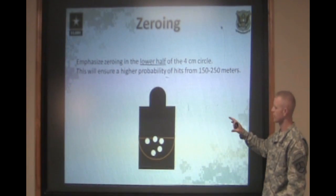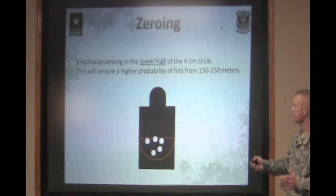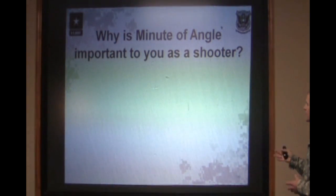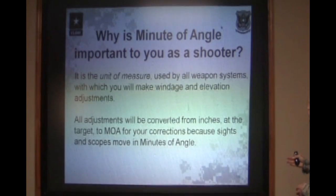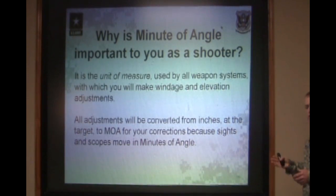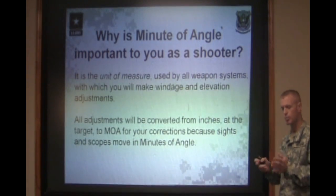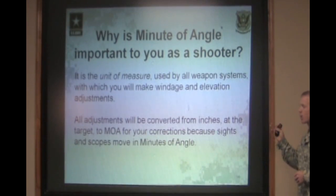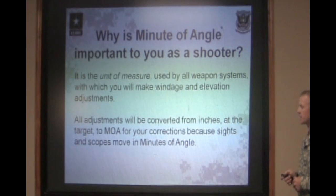Now that we know how to zero the rifle at 25 meters and where we should be zeroing to achieve hits from zero all the way up to 300 meters, we're going to talk about a term used when manipulating sights called minute of angle and why it's important to the shooter. Minute of angle is nothing more than a unit of measure used by all weapon systems for windage and elevation adjustments. As you adjust those sights, each click is worth a certain portion of a minute of angle. All adjustments will be converted from inches on the target to minutes of angle on the sights.